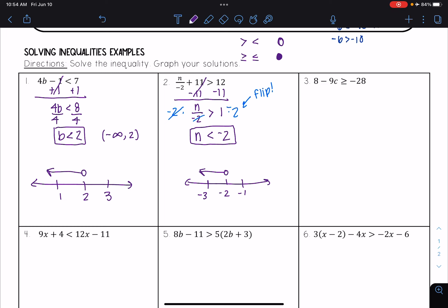Okay, let's look at one more for this video. So here I have 8 minus 9c is greater than or equal to negative 28. I want to get c by itself, so I want to first subtract 8 from both sides. So I get negative 9c is greater than or equal to negative 36.